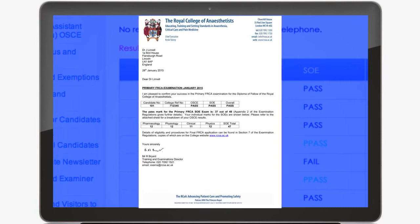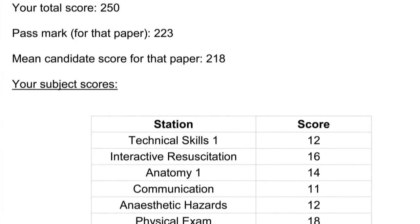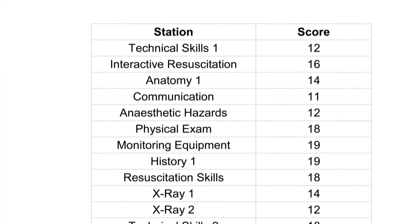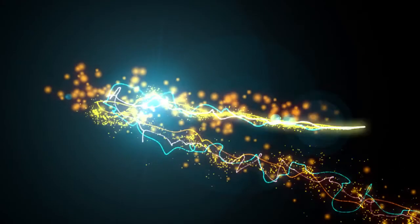Confirmation of the results will be sent to you by post. Your result letter will advise you of your scores in each section of the SOE and each station of the OSCE, along with your total scores for each component. Examples of OSCE and SOE questions can be found on the examinations pages of the college website and in the guide to the primary examination. If you require any further assistance in applying or preparing for your examination, then please do not hesitate to contact the examinations department. We hope you have found the SOE and OSCE videos useful in gaining an insight into what to expect when sitting the primary FRCA OSCE SOE examinations.